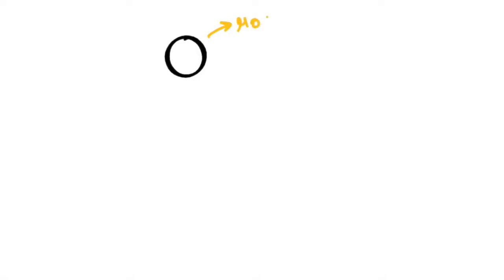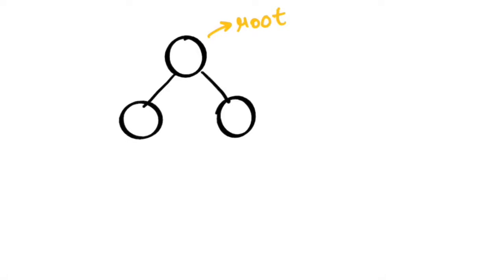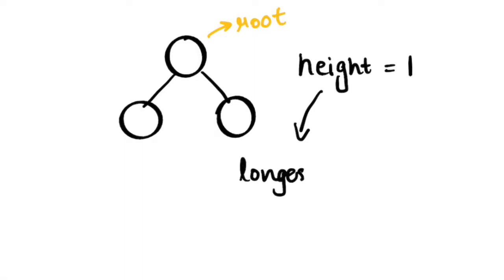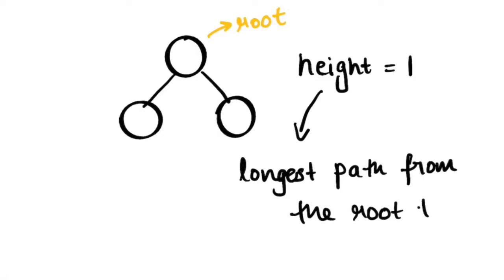Today we are going to discuss a problem in which we need to calculate the height of a binary tree. Let's say this is a binary tree in which this particular node is a root and these are its two child nodes. If we need to calculate the height of it, it will be 1. Always remember, the height of a binary tree is always equal to the longest path from the root to any leaf node.